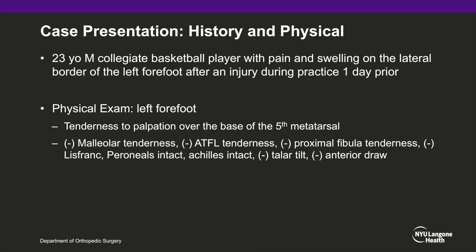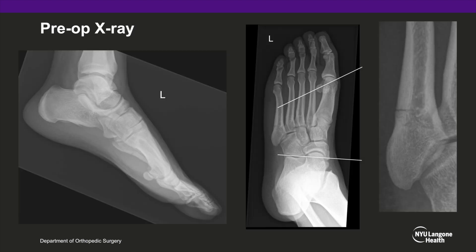Our patient is a 23-year-old male collegiate basketball player, division 1, with pain and swelling on the lateral aspect of his forefoot. He sustained the injury during practice one day prior. Physical exam demonstrates tenderness over the base of the 5th metatarsal. He has no ankle tenderness, and the rest of his examination is normal. X-rays confirm a Jones fracture in zone 2.